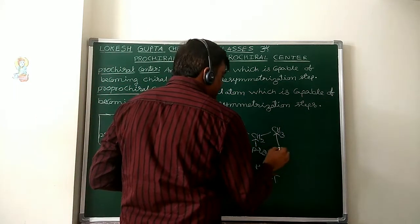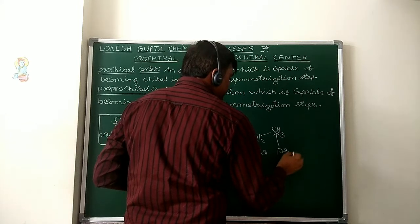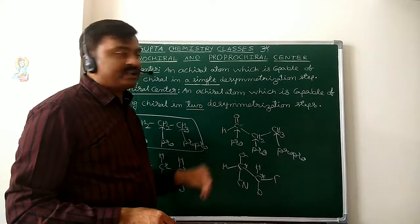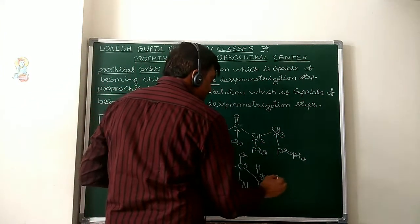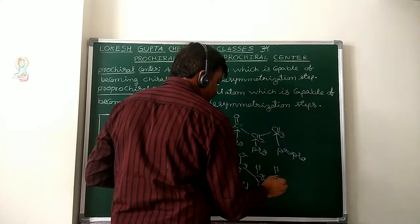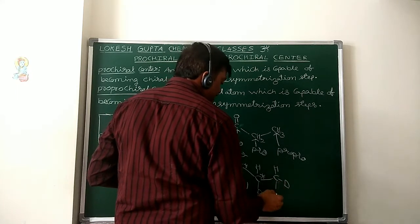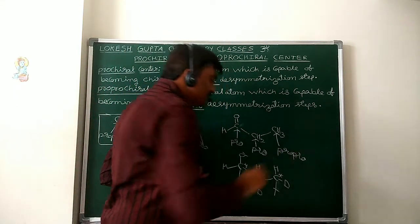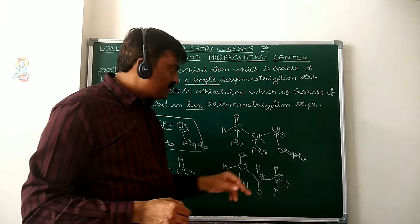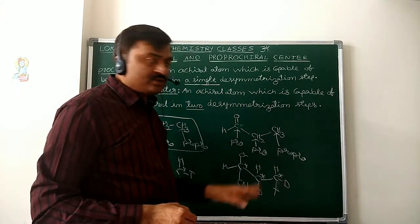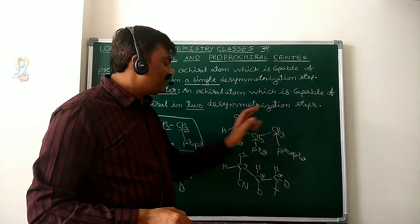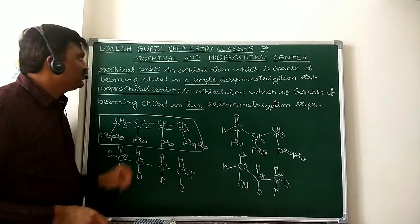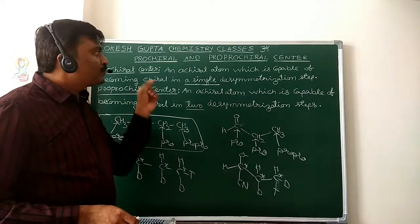The terminal methyl carbon comes under Pro Pro Chiral. Three similar Hydrogens are present; out of three, if one Hydrogen is substituted with Deuterium and another is substituted with Tritium — two desymmetrization steps — it becomes Chiral. That is why it is Pro Pro Chiral. So this is the difference between Pro Chiral and Pro Pro Chiral.